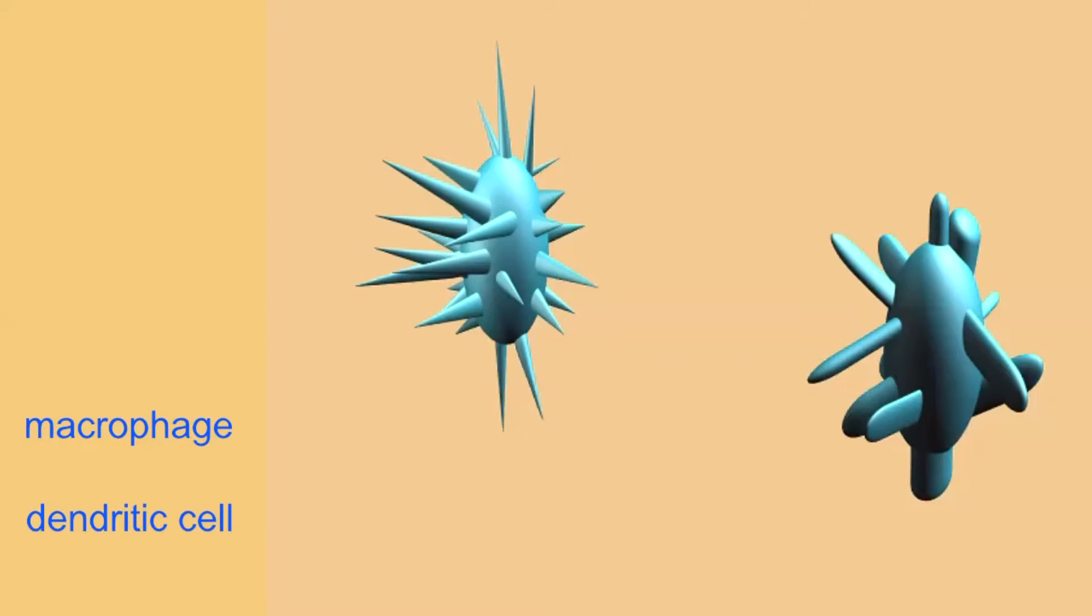Both macrophages and dendritic cells are antigen-presenting cells that, after performing phagocytosis of microbes, can present the microbes to T-cells and stimulate them for further immune reactions.